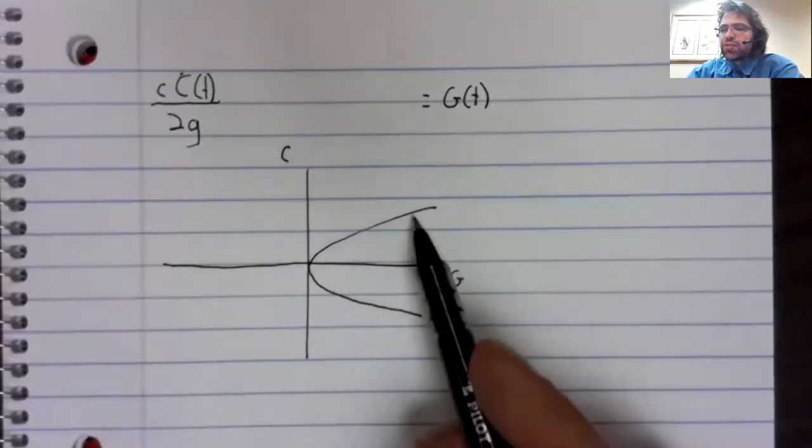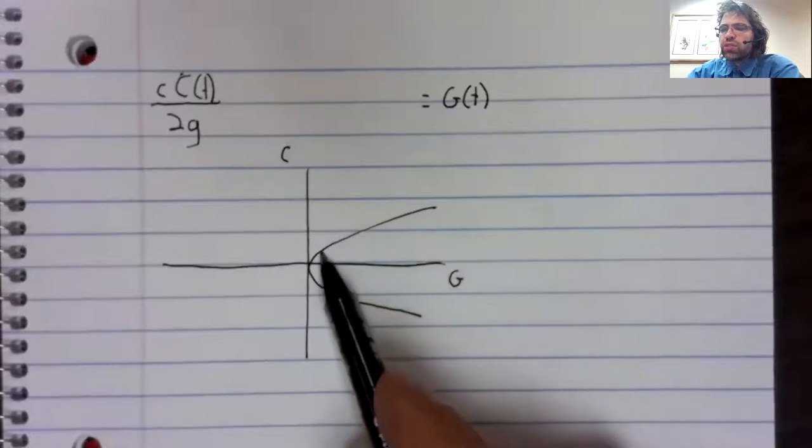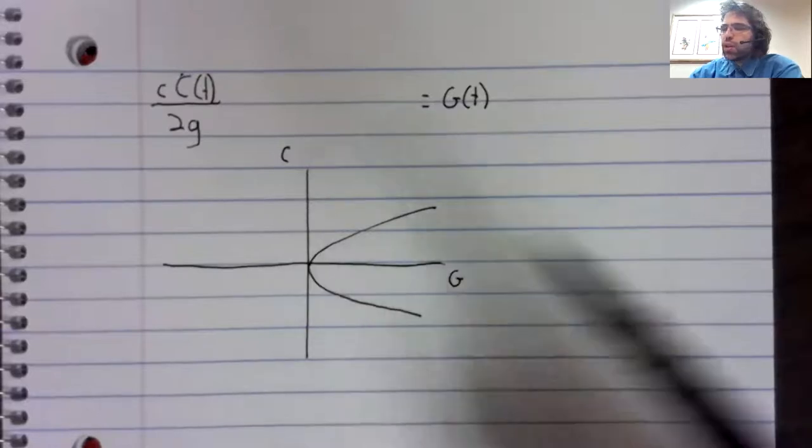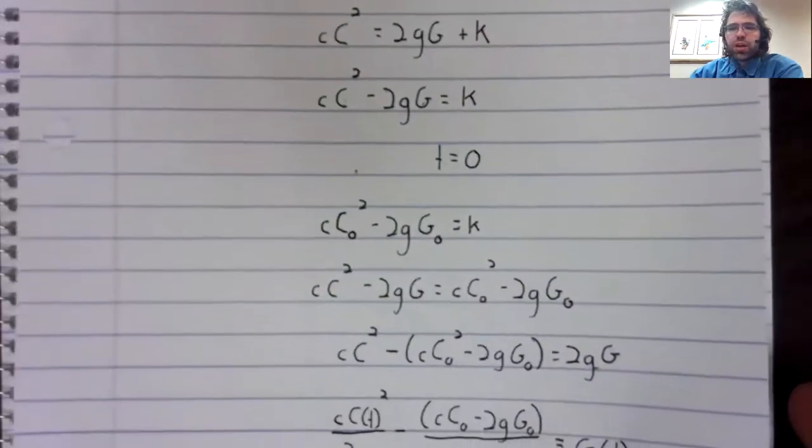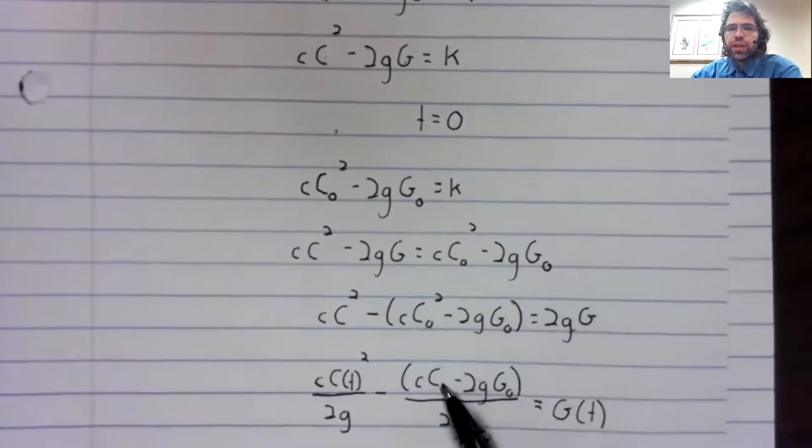As time passes, both C and G will decrease until they mutually annihilate each other. Let's now ask ourselves what this is doing to the parabola.